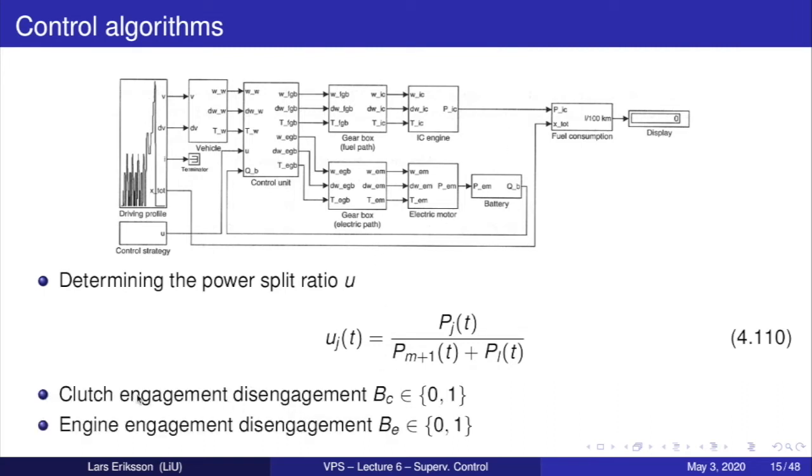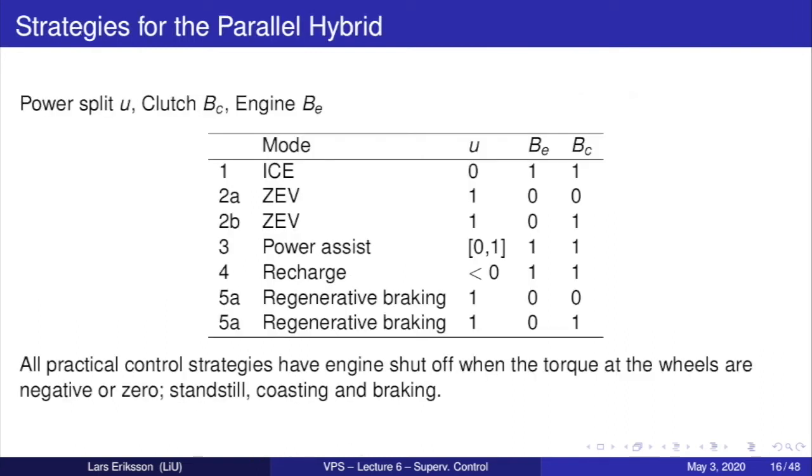So we're determining this kind of power split. And we can have different options with clutch engagement or we can decouple the engine entirely. Here we have some strategies for the parallel hybrid where we have the power split, the clutch and the engine decoupling. All practical control strategies have engine shut-off when the torque at the wheels are negative or zero. So when we have regenerative braking, when we would have engine braking, it's possible to turn off the engine and use that for regenerative braking. And when at standstill, it's no use of having the engine on. Then we can have coasting and braking.